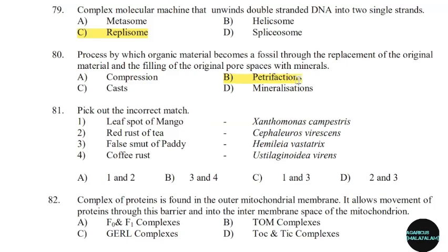81st question: Pick out the incorrect match. Correct answer: Option B — 3 and 4.